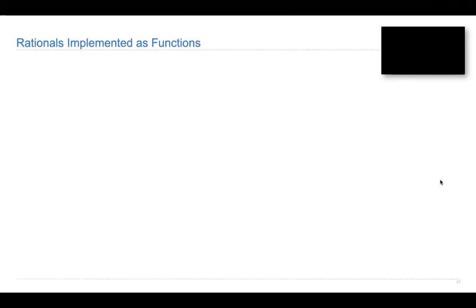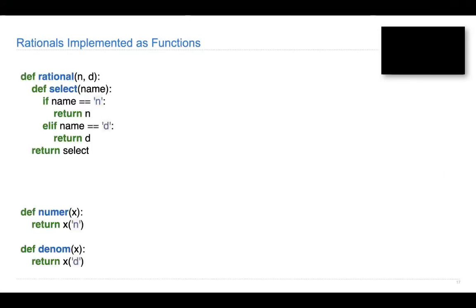The question was: what's going on with data abstraction? In particular, there was this moment in the lecture when we changed the implementation of the rational and numerator/denominator functions. Why would we do that? Well, this is not a good example of why you would change the implementation of something — it was just meant to show that you could change it, that there are other options, and that if you did change it, some parts of your program wouldn't break.